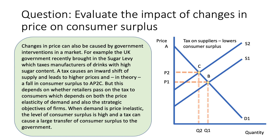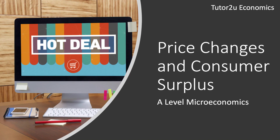Whether the levy is passed on depends on the price elasticity of demand and the objectives of the firms. Typically, when demand is price inelastic, there's quite a lot of consumer surplus and a tax causes the price to rise, representing a transfer of consumer surplus to the government in the form of extra tax revenue. So there we go — a quick video looking at three examples of how changes in price can bring about a change in consumer welfare.